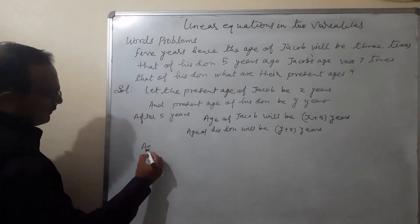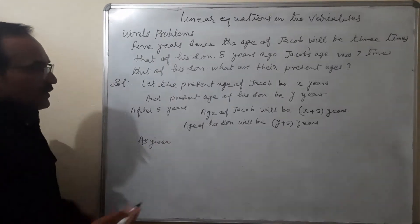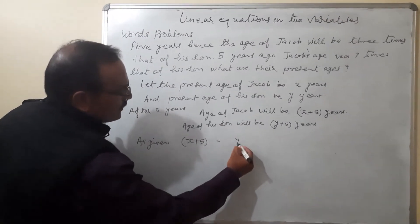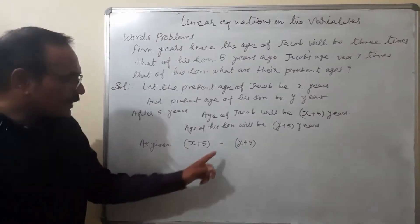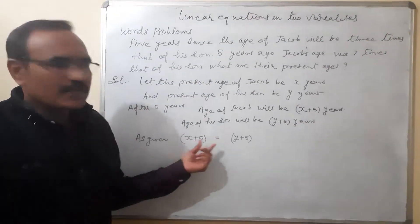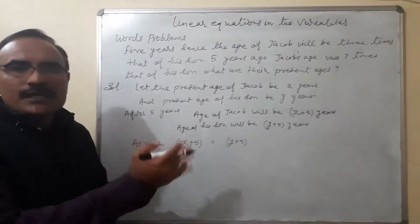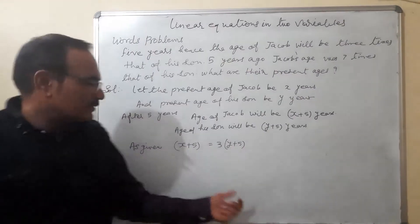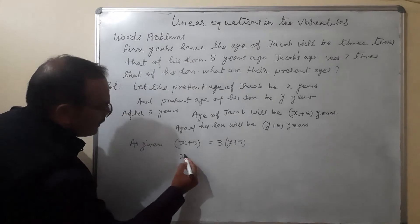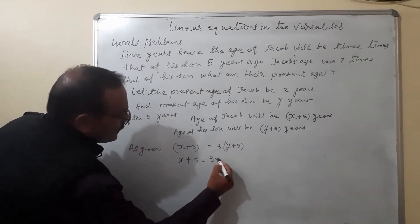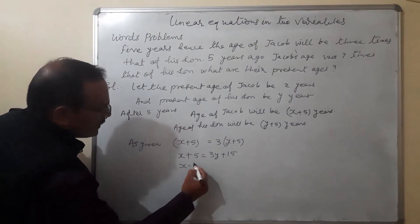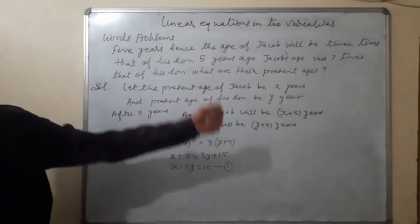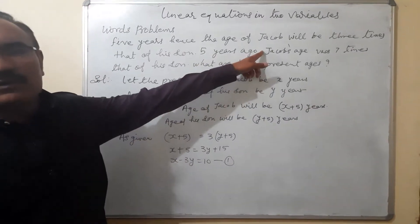The condition given in the first line is that Jacob's age will be 3 times that of his son. So the age of the father after 5 years is x plus 5, and the age of the son after 5 years is y plus 5. Since the father's age is 3 times the son's, we multiply the son's age by 3. This gives x plus 5 equals 3y plus 15, which simplifies to x minus 3y equals 10. This is equation number 1.